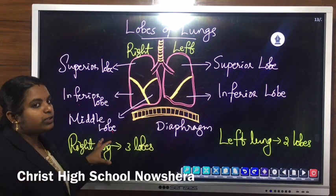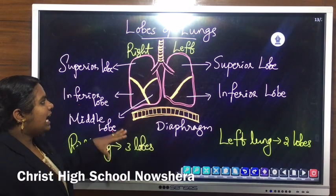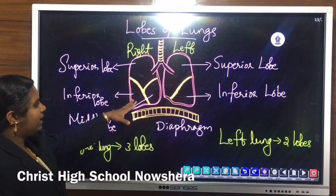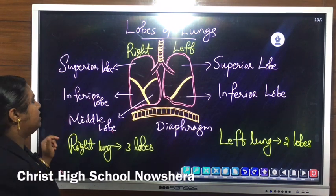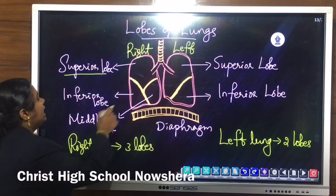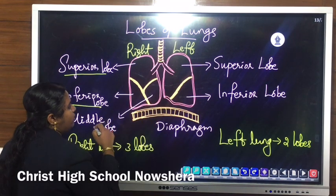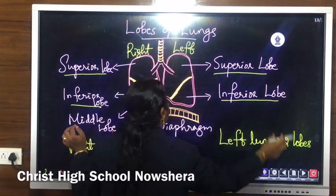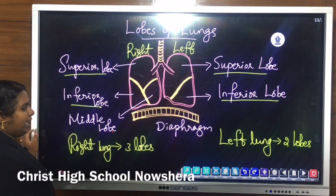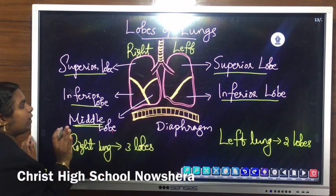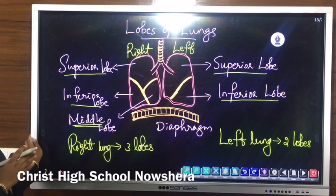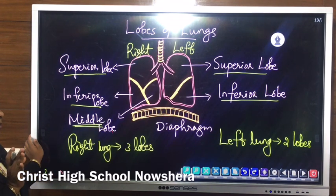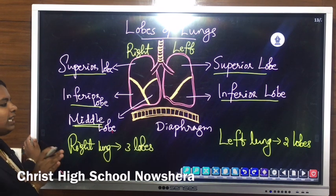The right lung and left lung each have lobes. The right lung has three lobes: the upper part is the superior lobe, the lower part is the inferior lobe, and in between is the middle lobe. The left lung has only two lobes: the superior lobe and the inferior lobe. The floor of the chest cavity is known as the diaphragm.